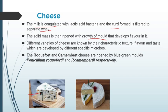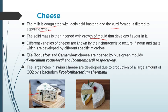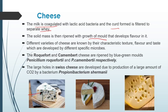The large holes in Swiss cheese — you may have seen in Tom and Jerry cartoons in your childhood — that special cheese with big holes is nothing but Swiss cheese. These large holes are actually developed due to the production of large amounts of carbon dioxide by a specialized bacterium called Propionibacterium sharmanii.